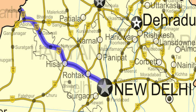National Highway 10 was a national highway, 403 km in length, in northern India that originated at Delhi and ended at the town of Fazilka in Punjab, near the Indo-Pak border.